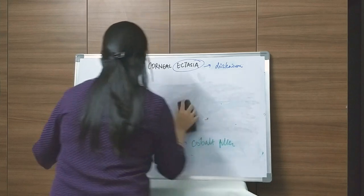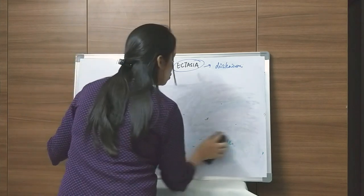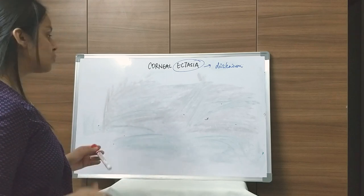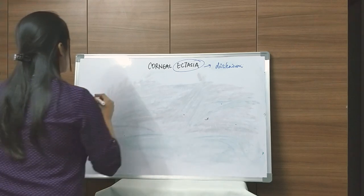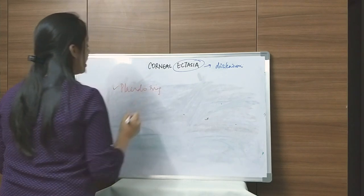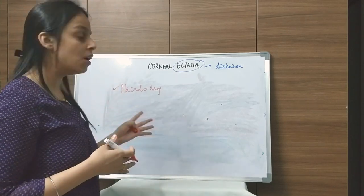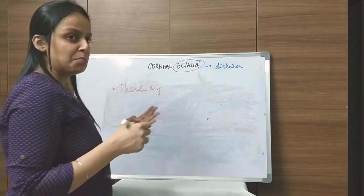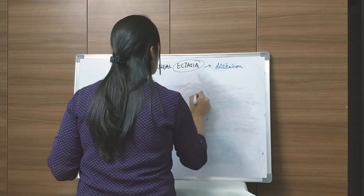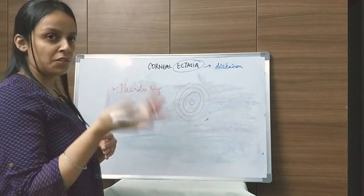How will you investigate cases of keratoconus? You can do slit lamp examination, but for imaging studies the first thing you can do is use a Placido disc. This is a simple circular disc consisting of concentric black and white circles with a hole in the center through which the observer can look at the reflex on the cornea.